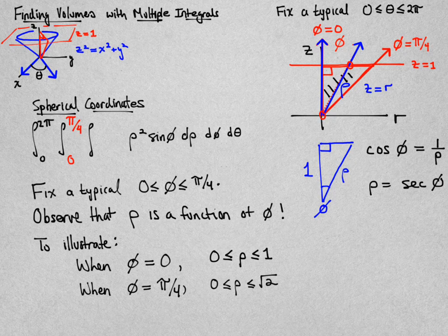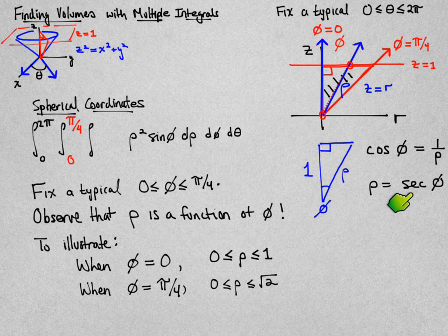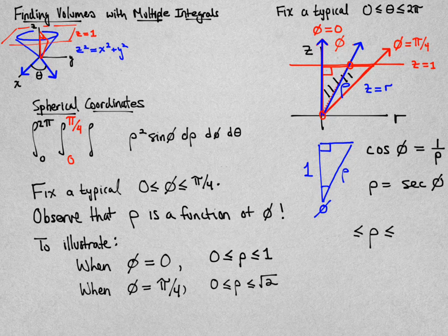What this tells me is that when I want to find the length from the origin to the line z equal to 1, I should use the secant function to tell me that value of rho. And in other words, my limits of integration for rho go from 0 to secant of phi.